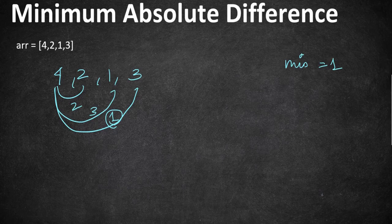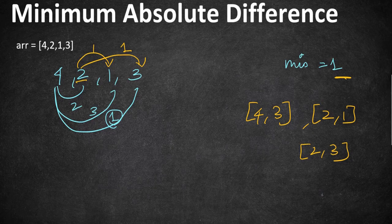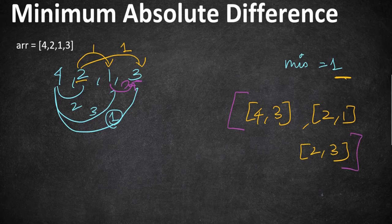We've paired everything with four, so now starting from two: the difference between two and one is one, and two and three is also one. So we have found two more pairs with the minimum value — four-three, two-one, and two-three. The remaining pair one-three has a difference of two, so we don't add it. The minimum difference across all pairs is one, and these are the pairs we return as our result.